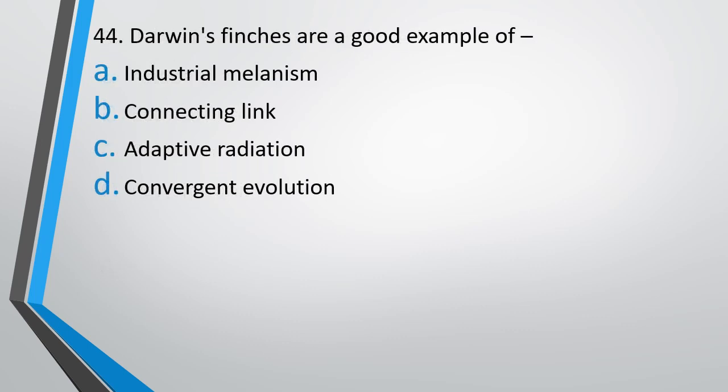Question number 44. Darwin finches are good example of: industrial melanism, connecting link, adaptive radiation, convergent evolution. Darwin finches are good example of - correct answer is option C, adaptive radiation.